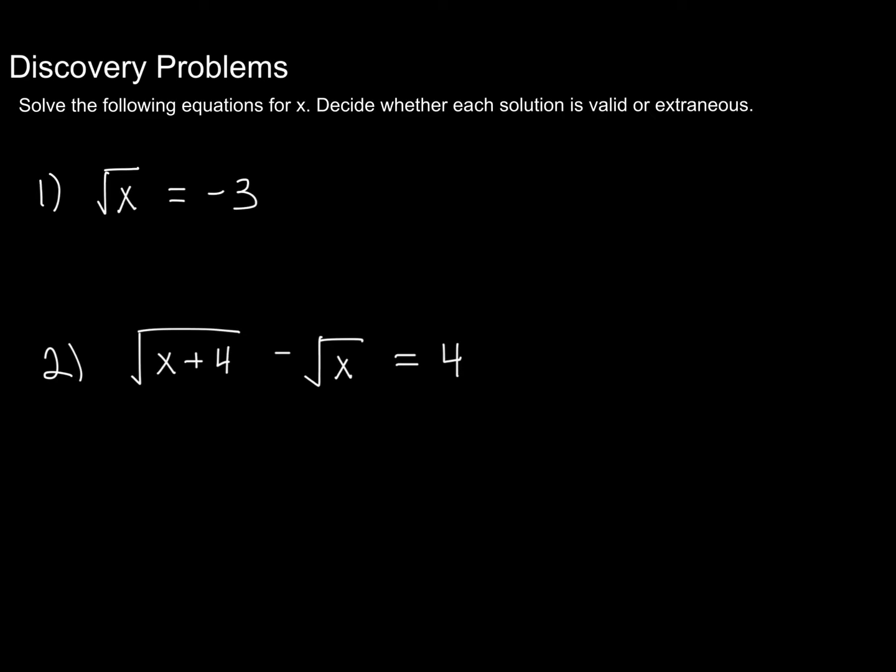Alright, so first with number one, when we square both sides of our equation, we're going to end up with a solution of positive 9. However, before we even square both sides, we should have noticed that there is never going to be a value x such that the square root of x is a negative value. And so when we do get 9, we need to make sure that we test it, and square root of 9 is positive 3, not negative 3. Remember we discussed that squaring always creates a positive value, hence we run into the possibility of getting an extraneous solution as we have here. So there are no solutions.